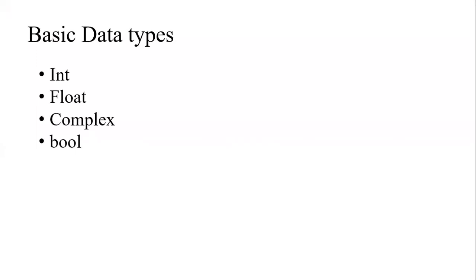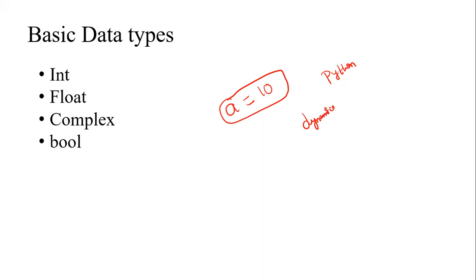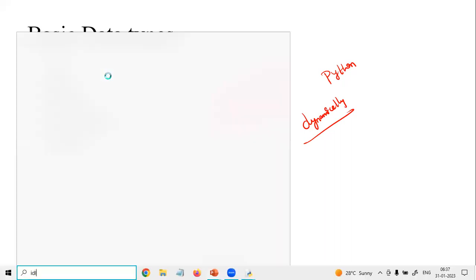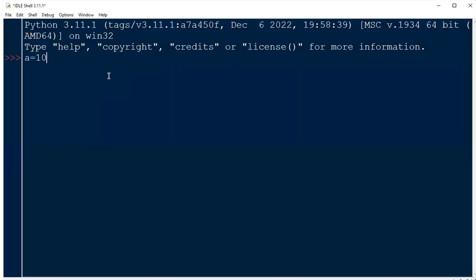Next, apart from comments, we have basic data types: int, float, complex, and Boolean. The speciality of Python data types is that they are dynamically typed — you are not mentioning what type of data it is. If you take 'a = 10' and want to verify, you can use the type function, which will return 'int'. Similarly, if I take 'b = 2.5', type of b will return 'float'.